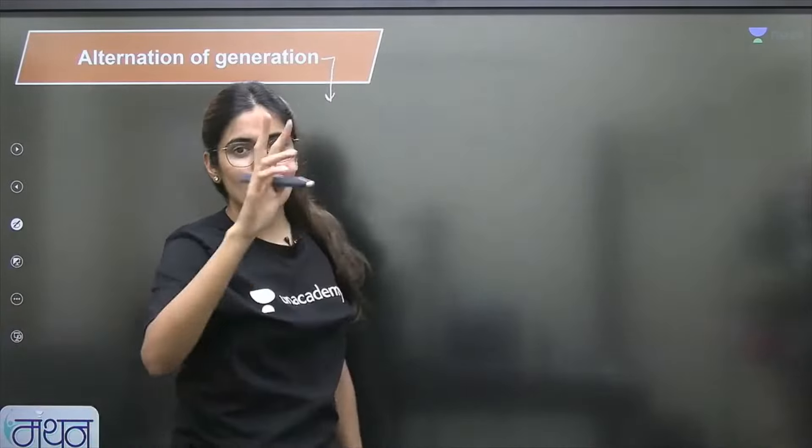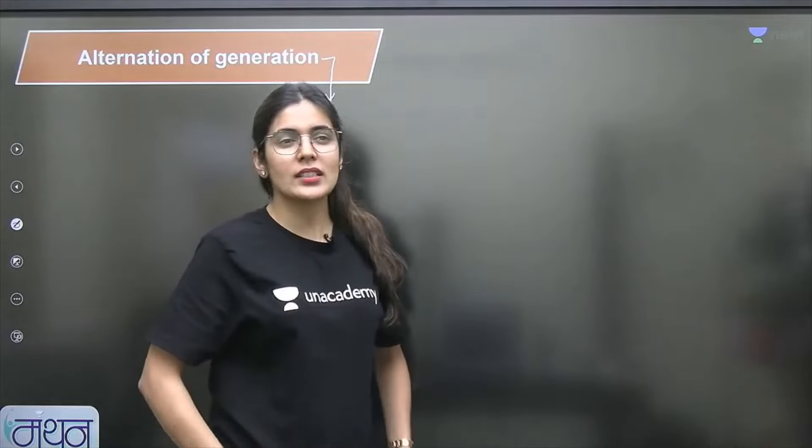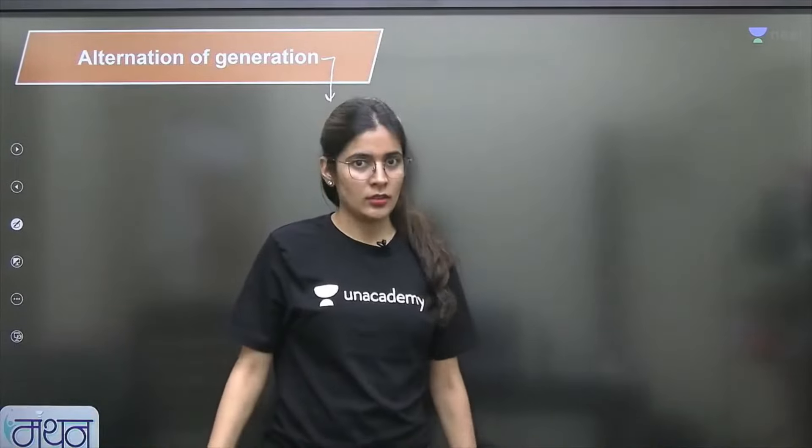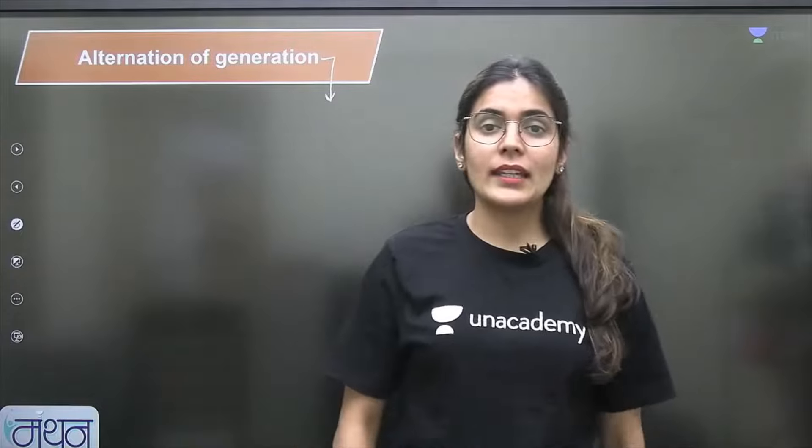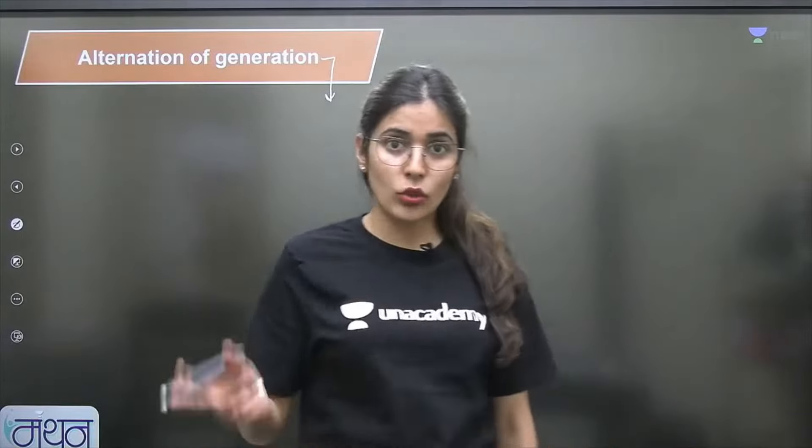In a plant's life, two types of cycles come, two types of stages. Like us humans, we will spend our whole life in this one single body. But in a plant's life, there are stages, two phases can come.